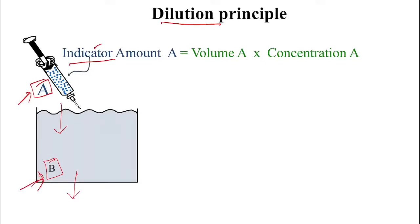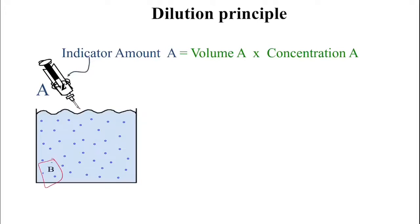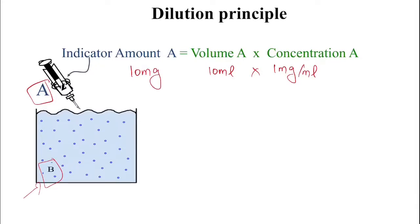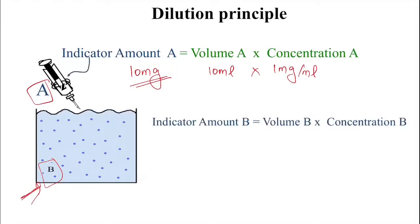Let's see this with an example. Here we have injected a known quantity of substance into compartment B. Let's say we injected 10 ml of the dye which had an original concentration of 1 milligram per ml, so the total amount injected is 10 milligrams. We can then measure the final concentration in B — let's say we get 0.1 milligram per ml — and we do not know the volume of this compartment.